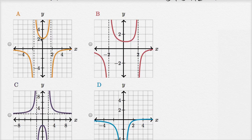So choice A, our y-intercept is at two. When x equals zero, our graph goes through two. So we can rule that out. The y-intercept needs to be one.